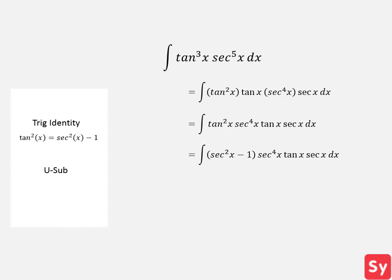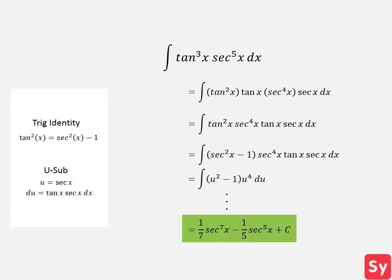Now it's time to use u-substitution. We set u equal to secant of x, and so du equals tangent of x times secant of x dx. We substitute u and du back into the integrand and we get the integral of the difference of u squared minus one times u to the fourth du. After using the power rule, we'll finally get our answer, which is one seventh times secant of x to the seventh minus one fifth times secant of x to the fifth plus C.